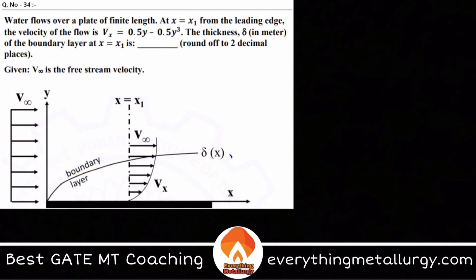This question is from GATE 2021. It says water flows over a plate of finite length at x equal to x1 from the leading edge. The velocity of the flow is vx equal to 0.5y minus 0.5y cubed. The thickness delta in meters of the boundary layer at x equal to x1 is how much. Basically, what they are asking is this particular thickness, delta. Let us first try to understand what boundary layer thickness or boundary layer theory is.